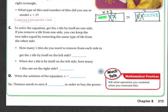How many tiles do I need to remove from each side to get X by itself? That would be 2. When the X tile is by itself on the left side, 5 one-tiles will be on the right side. So the solution of the equation is X equals 5. Thomas needs to save $5 in order to buy the poster.